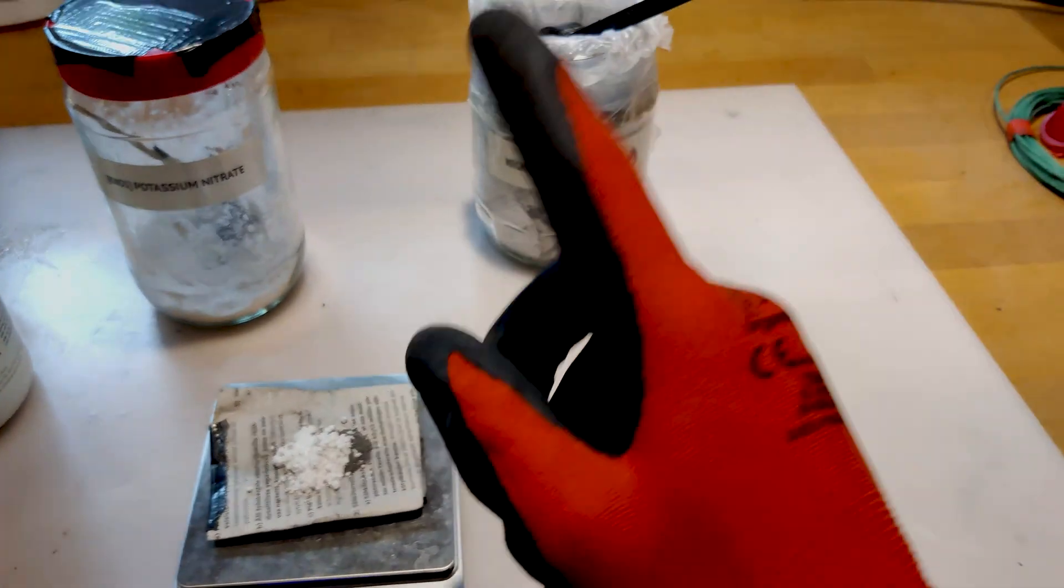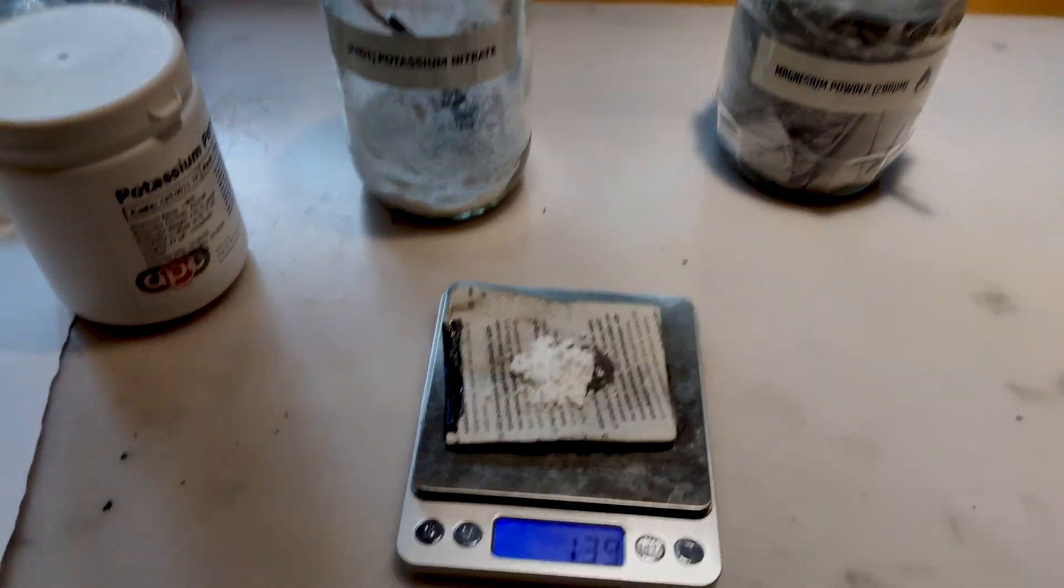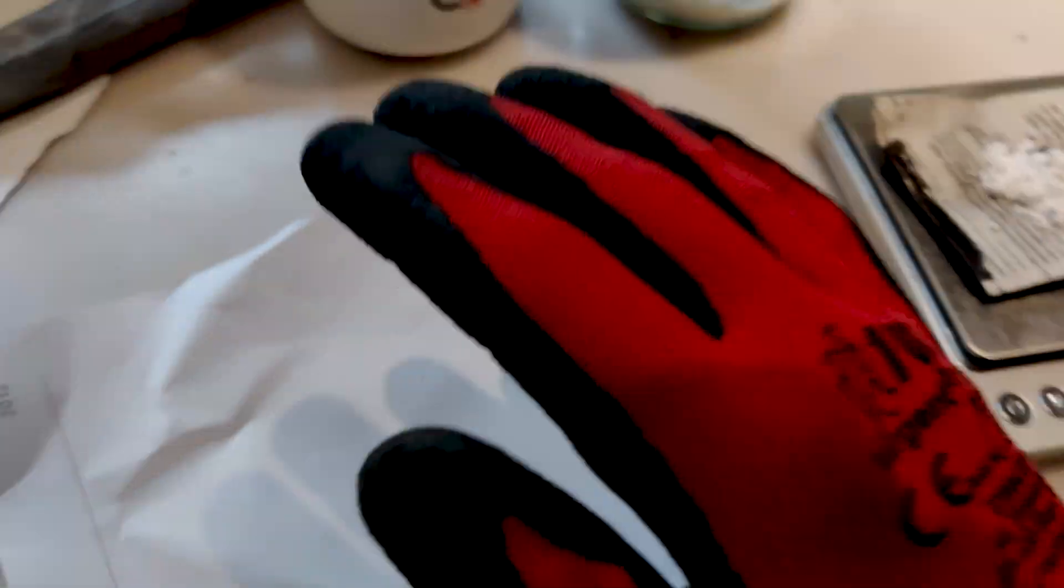The next part is the mixing. Here there is only really one option and that is the diaper method. So let me get a piece of paper. Here's my piece of paper. It can be any type of paper, it doesn't really matter as long as it's not covered in some plastic.